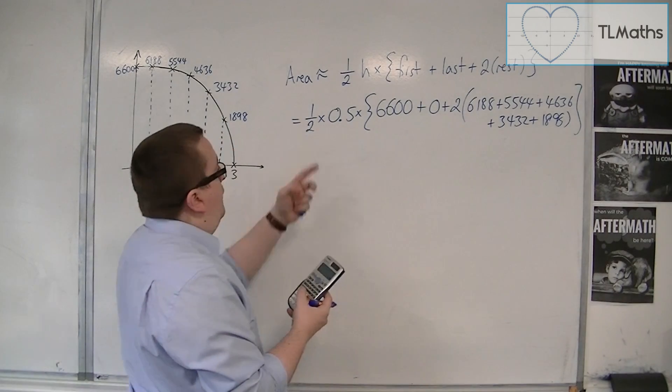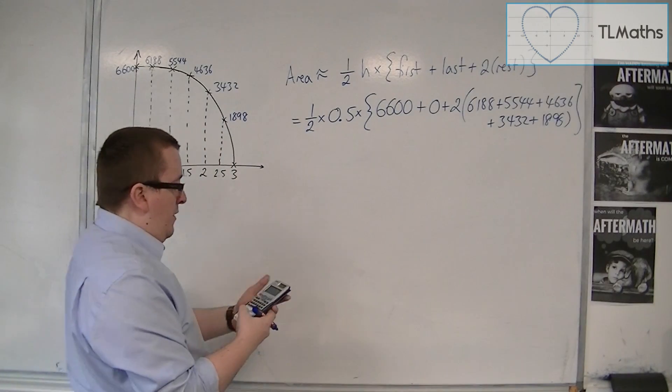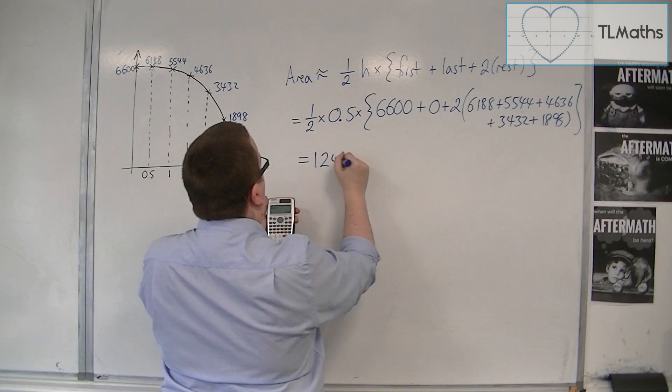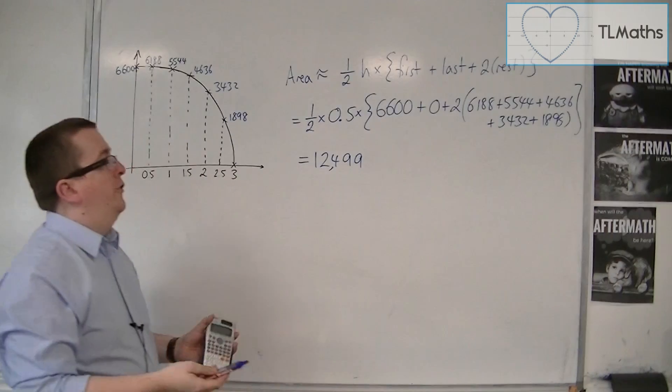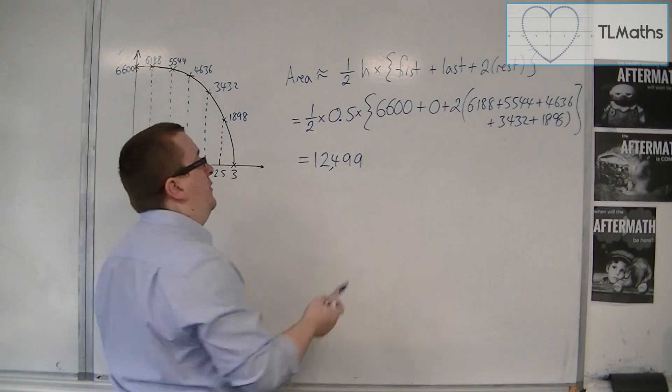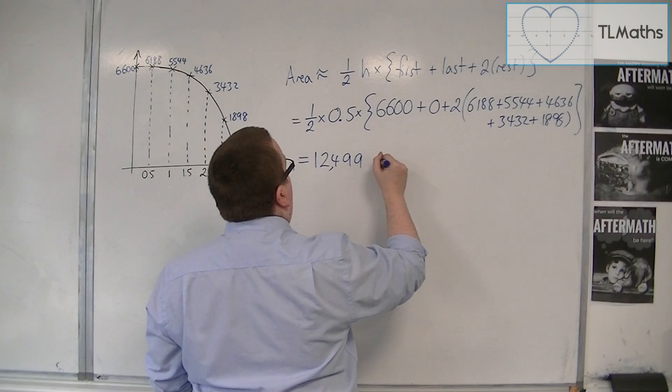And then I want to halve it and halve it again. So divide by 4. And we get 12499. So the area is approximately 12,499 square units.